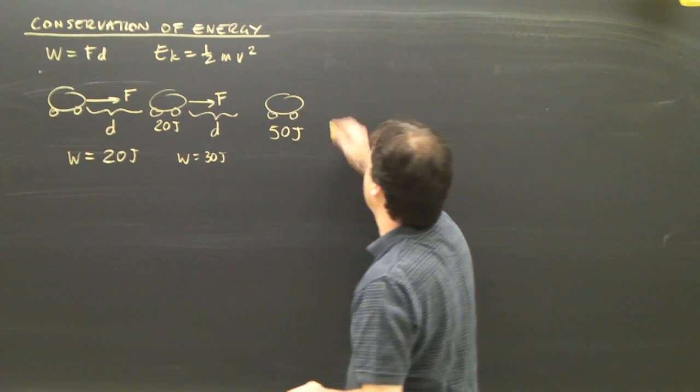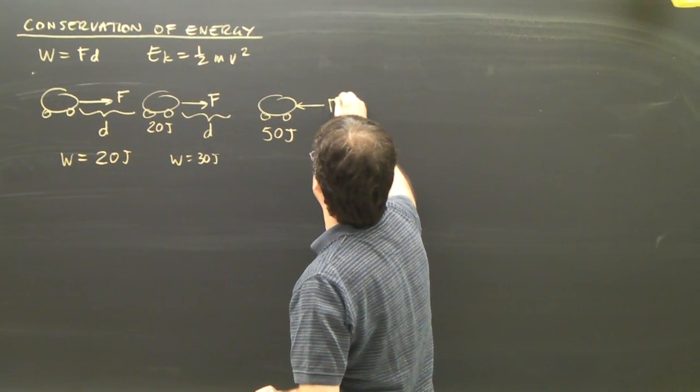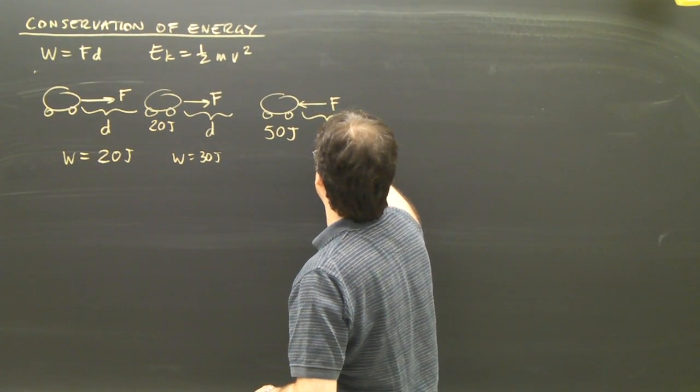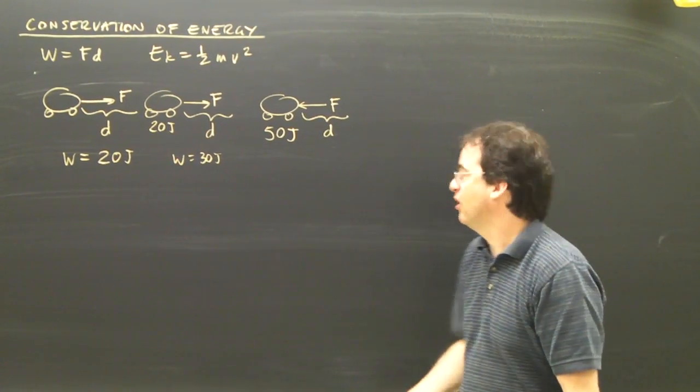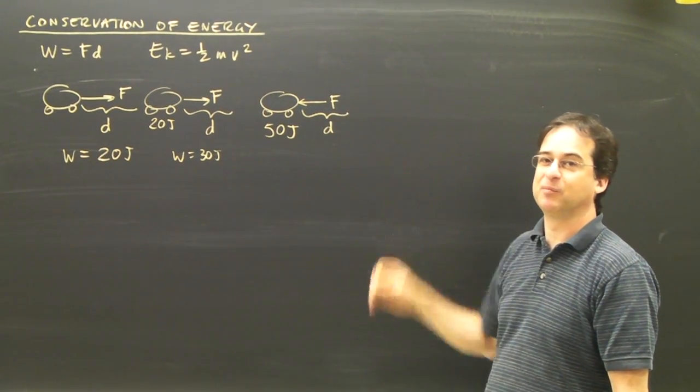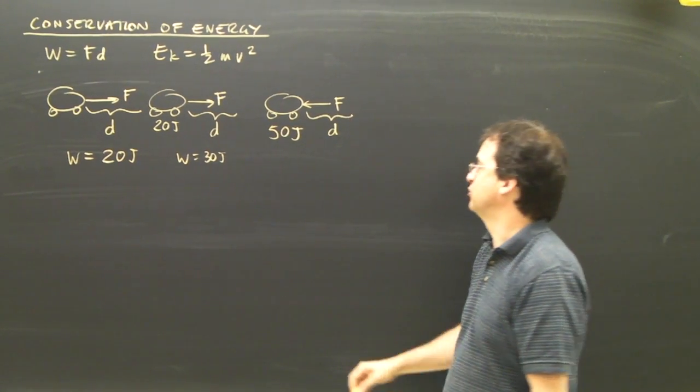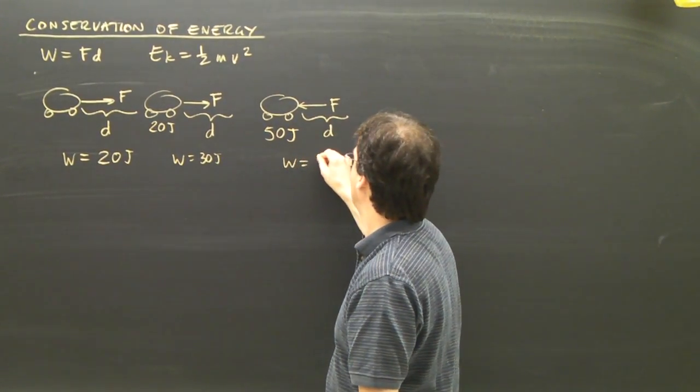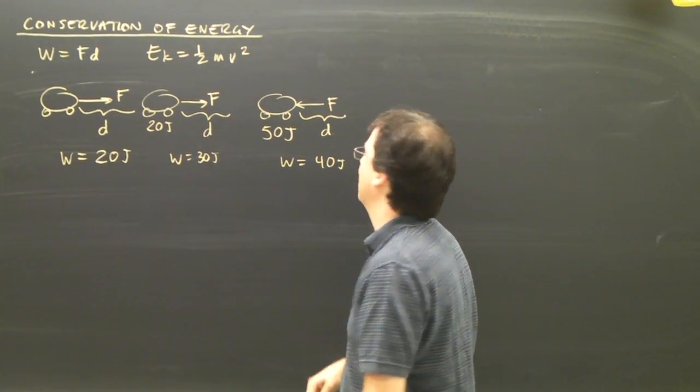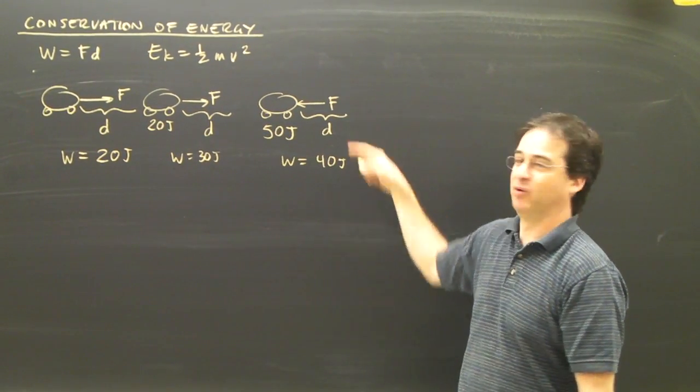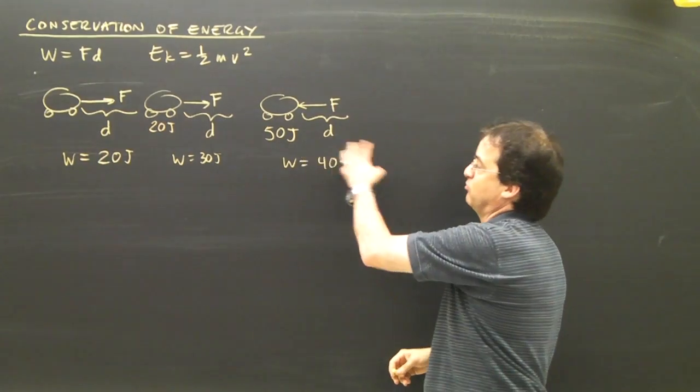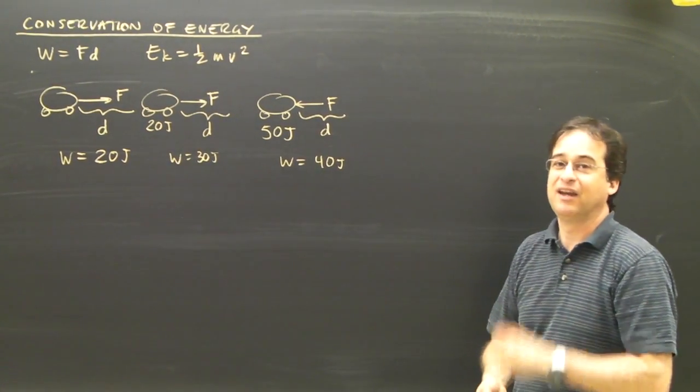So let's say I want to slow the car down. I apply a force here over some displacement. And again I say, well, how much force, what was the force times the displacement? How much work did I do? I multiply those out and let's say that comes to 40 joules. The work I do on the car is 40 joules. But since the force was backwards, relative to the direction the car is moving, then it's negative work.